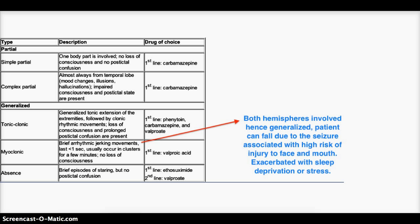The next one in the category was complex partial. We discussed that complex partial involved impaired consciousness. And over here it says that it always arises from temporal lobe. There could be mood changes, illusions, and even hallucinations that we discussed as well. Post-ictal states are present as well. And first line, again, just like simple partial, is carbamazepine.